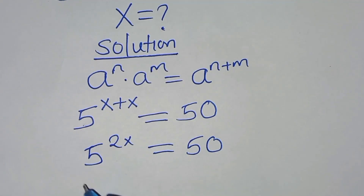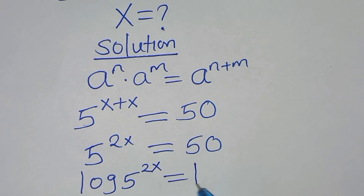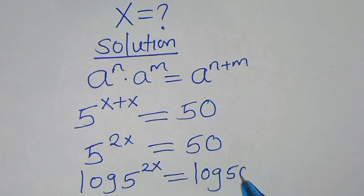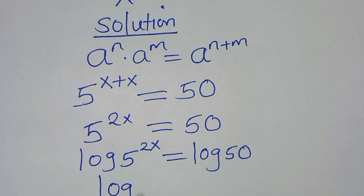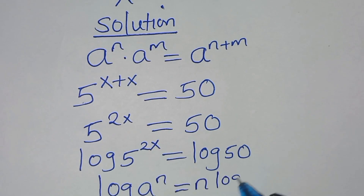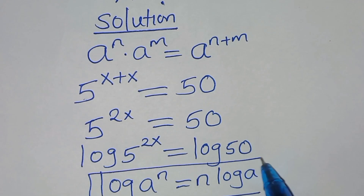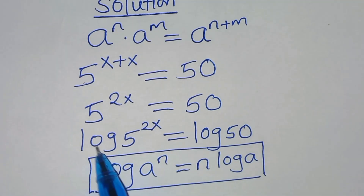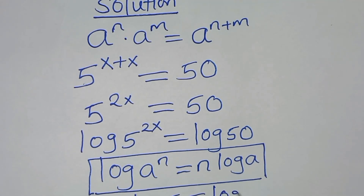To solve for the value of x, we introduce logarithm on both sides, so we have log of 5 to the power 2x, this is equal to log 50. The left side is in the form of log a to the power n, which we can express as n·log a. Applying this power rule property of logarithm, log 5 to the power 2x becomes 2x·log 5, and this is equal to log 50.